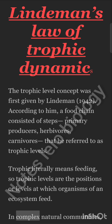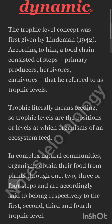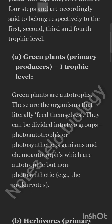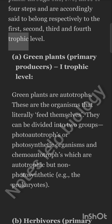In complex natural communities, organisms obtain their food from plants through one, two, three, or four steps and are accordingly said to belong respectively to the first, second, third, and fourth trophic level.